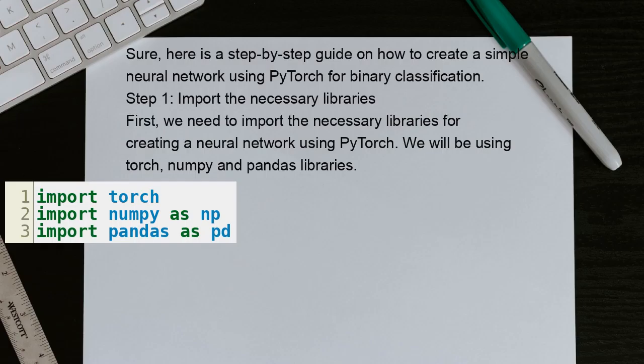Here is a step-by-step guide on how to create a simple neural network using PyTorch for binary classification. Step 1: Import the necessary libraries. First, we need to import the necessary libraries for creating a neural network using PyTorch. We will be using Torch, Numpy, and Pandas libraries.